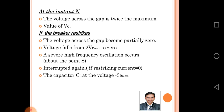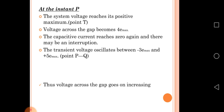The oscillation occurs about point S and the current is interrupted again when restriking current is zero. The capacitor Cl is at voltage negative 3 E max. At instant P, the system voltage reaches its positive maximum. At point T, voltage across the gap becomes 4 times E max. The capacitive current reaches zero again and there may be an interruption. The transient voltage oscillates between negative 3 E max and positive 5 E max.